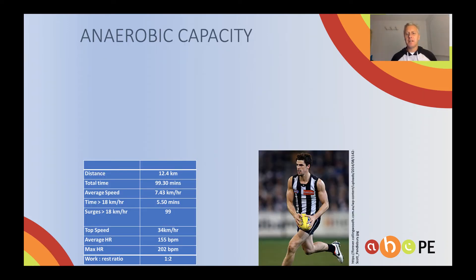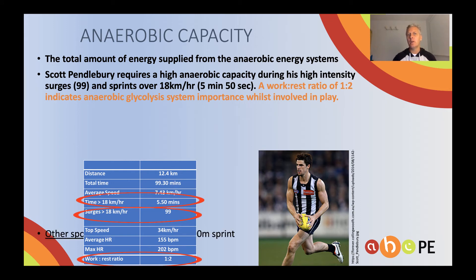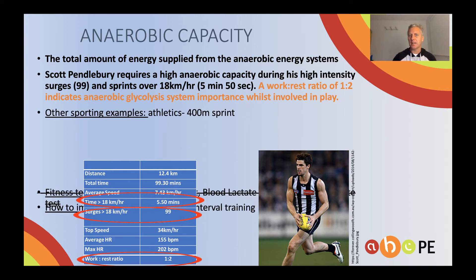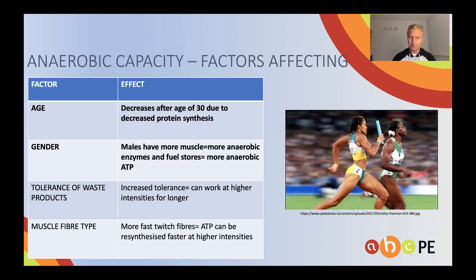I've selected anaerobic capacity as another fitness component that I saw Scott needed. During his high-intensity surges — of which there are 99 sprints — all that high-intensity work requires anaerobic capacity. The work-to-rest ratio of 1 to 2 also indicates to me that the anaerobic glycolysis system is important when Scott's involved in the play. I will use intermediate interval training or short interval training to improve anaerobic capacity. Make sure that you've got a couple of front and one back pocket answer for factors affecting.